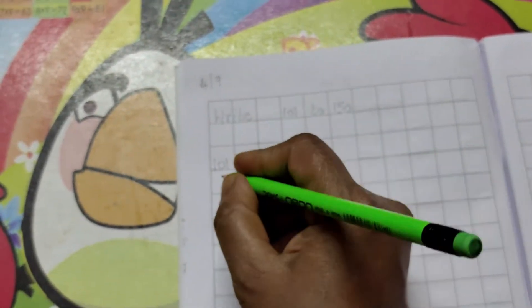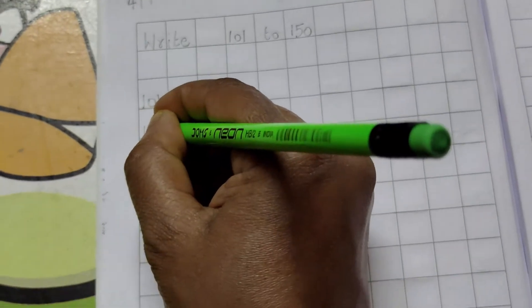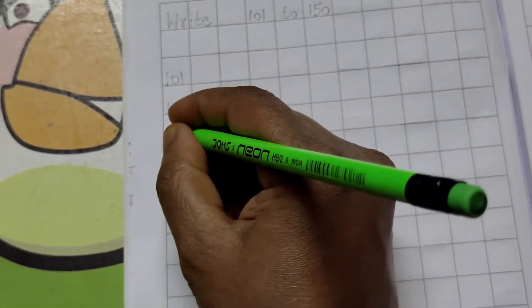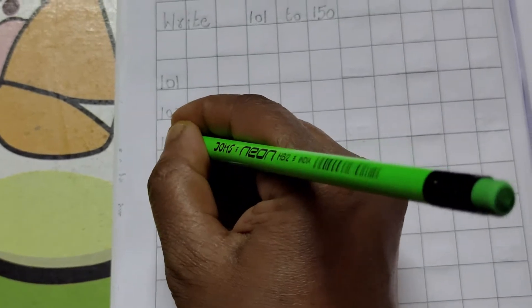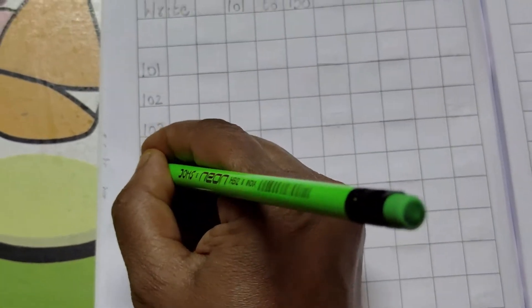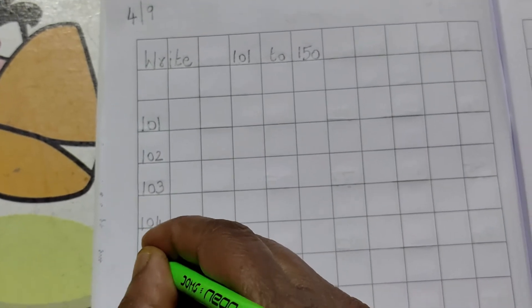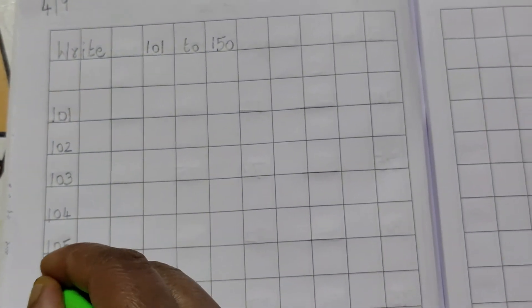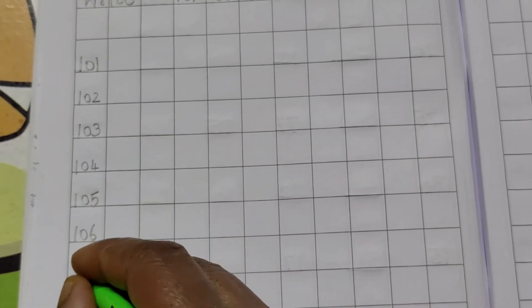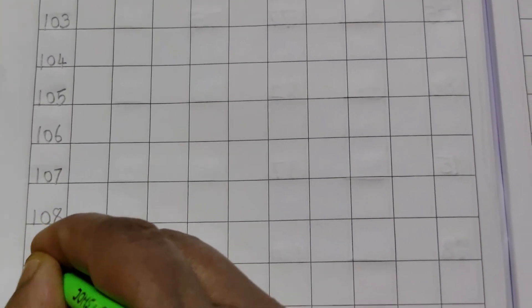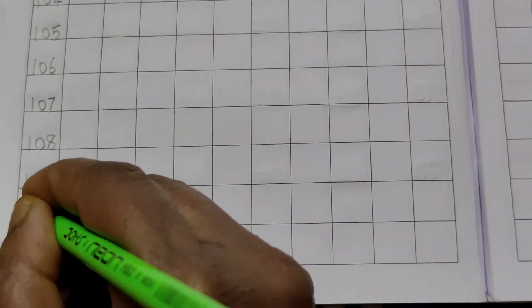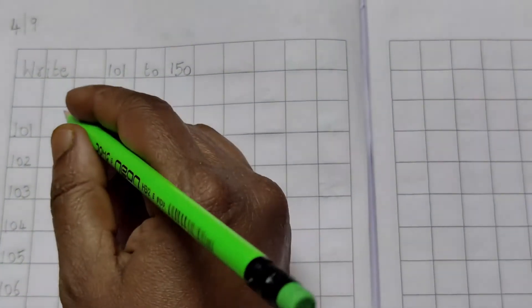101, 101, 102, 102. Say and write children. Always say and write. 103, 103, 104, 104, 105, 106, 106, 107, 107, 108, 109, 109, 110, 110, 110. After writing 110, leave one line. And then, start in the next line.